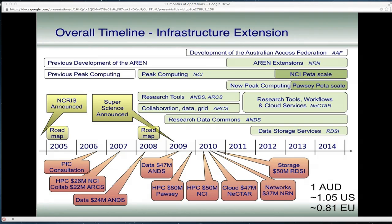Australia has an academic and research network that today provides 10 gigabit connectivity to universities and research institutes around the country with tens of gigabits internationally. That's getting an upgrade — for example, the $37 million research network program means that by the end of the year we'll be doing about 80 by 100 gigabit between sites and increasing the international link capacity to about 100 gigabit. There are other projects to do with peak computing, including funding high performance computing for the life sciences. Climate change is also a very important one.